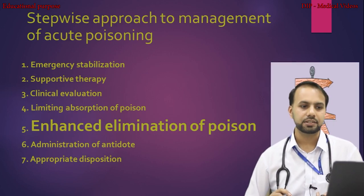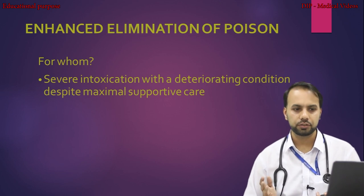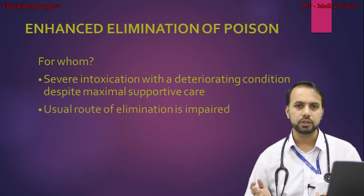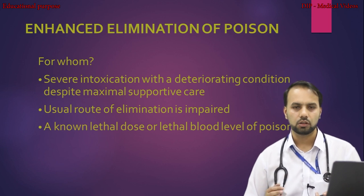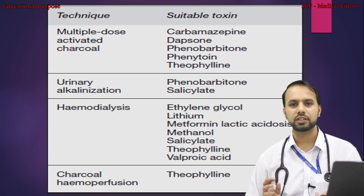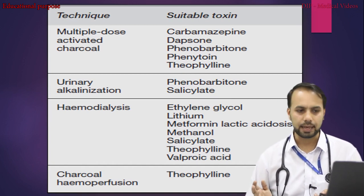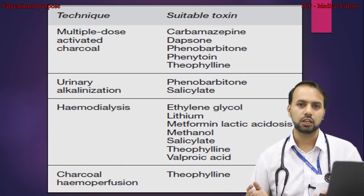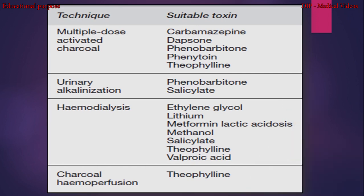The fifth step is enhanced elimination of poison, indicated in severe intoxication with deteriorating condition despite maximal supportive care, impaired elimination routes, or known lethal blood levels. Techniques include multiple-dose activated charcoal for carbamazepine, dapsone, or phenobarbitone; urinary alkalinization for phenobarbitone or salicylate poisoning; haemodialysis for ethylene glycol, lithium, or methanol; and charcoal haemoperfusion for theophylline poisoning.